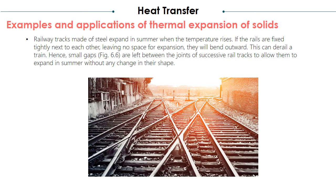Railway tracks: railway tracks made of steel expand in summer when the temperature rises. If the rails are fixed tightly next to each other leaving no space for expansion, they will bend outward, which can derail a train. Hence, small gaps are left between the joints of successive rail tracks to allow them to expand in summer without any change in their shape.